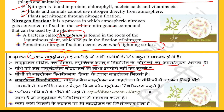Jab bijli chamakti hai, to itna adhik taapman ho jata hai jis se nitrogen ke anu toot kar oxygen ke saath jod jate hain. Nitrogen sthrikaran ke dwara podho aur jiv-jantwo ko vatavaran ki nitrogen milti hai. Rhizobium naam ke jivanu phalidaar podhoon ki jadhon mein milte hain.